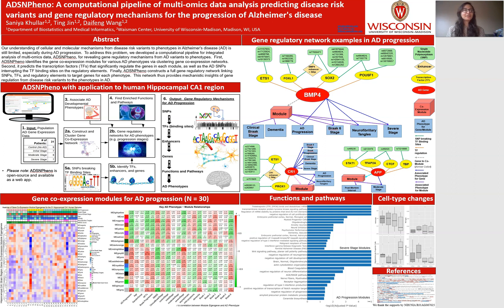We identified 30 gene coexpression modules for various AD phenotypes by using gene coexpression network analysis. Genes in different modules show different gene expression dynamics during AD progression. The bottom-left heat map illustrates how the represented modular expression patterns, also known as eigengenes, vary for AD phenotypes.